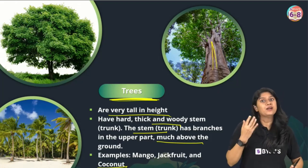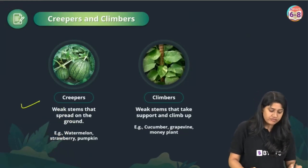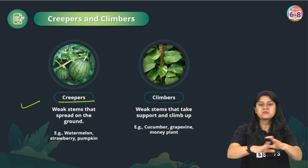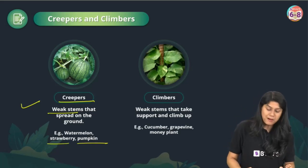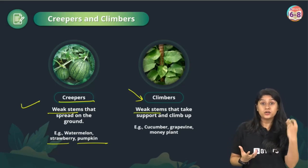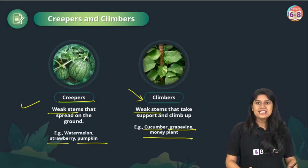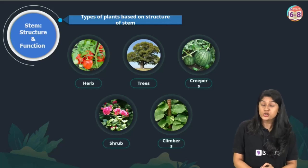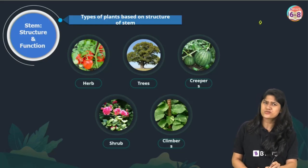Then we have two special types: creepers and climbers. Creepers have a weak stem and spread along the ground — they cannot climb. Examples are watermelon, strawberries, and pumpkin. Climbers also have a weak stem but, when provided support, they climb upward. Examples include cucumber, grapevine, and the very common money plant. Please remember all five categories: herbs, shrubs, trees, climbers, and creepers.